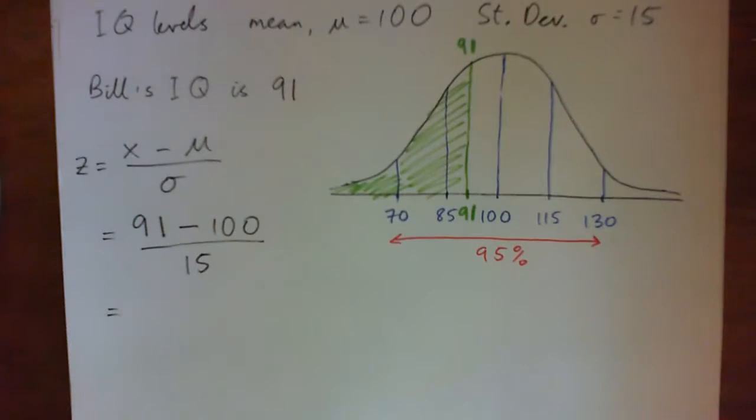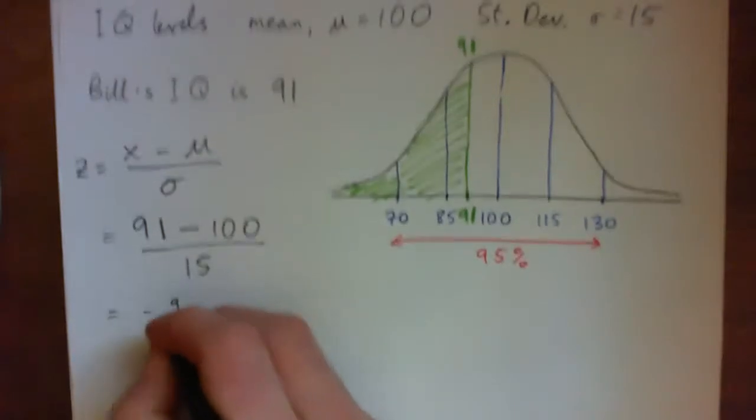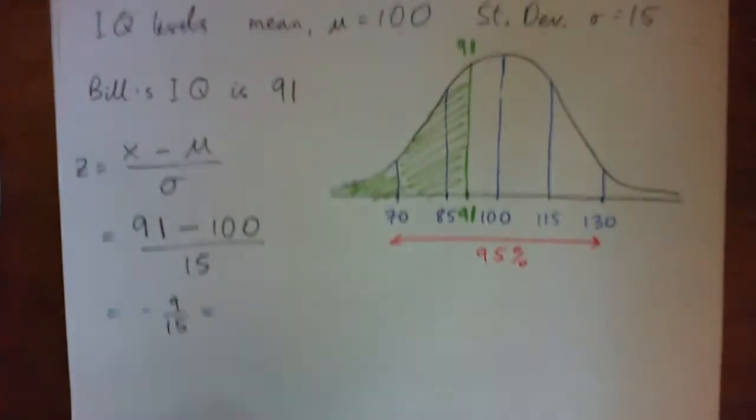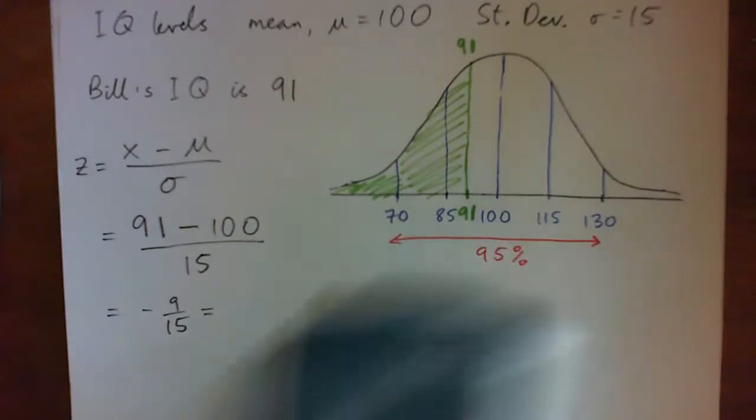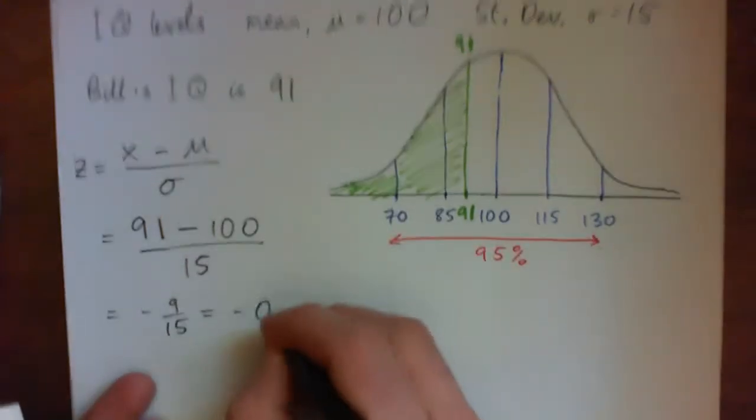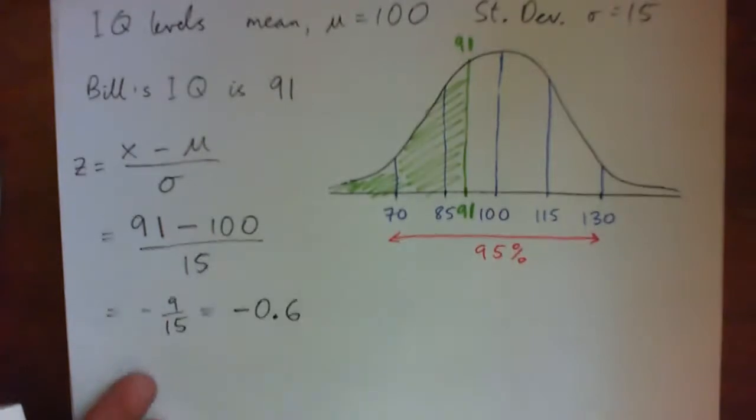And that gives us 9 over, or negative 9 over 15, right? Negative 9 over 15, negative 0.6, right?